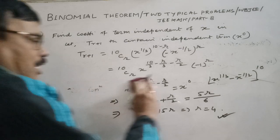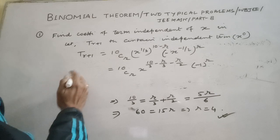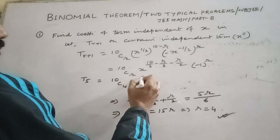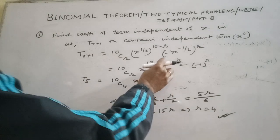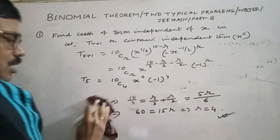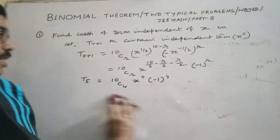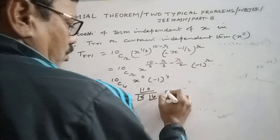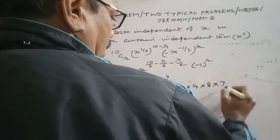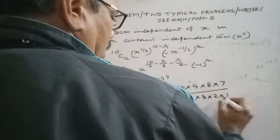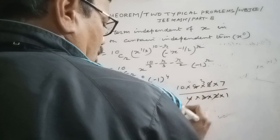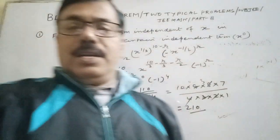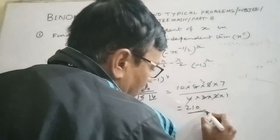The independent term is T5 (putting r = 4): 10C4 · x^0 · (-1)^4 = 10C4 · 1 · 1. Computing 10C4 = 10!/(6! · 4!) = (10 × 9 × 8 × 7)/(4 × 3 × 2 × 1) = 210. So the coefficient of the term independent of x is 210.